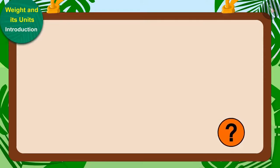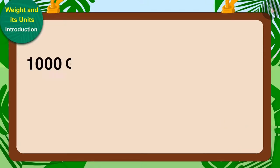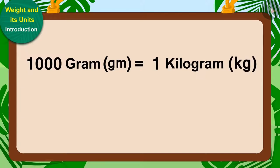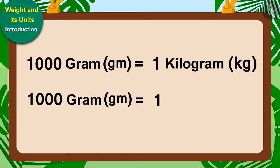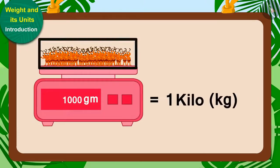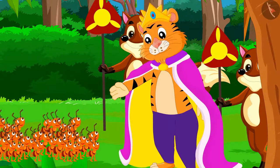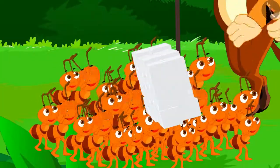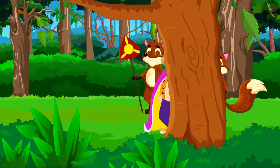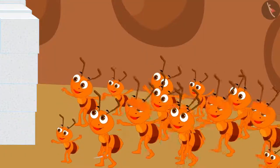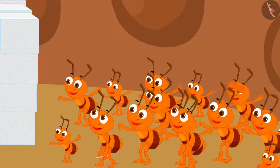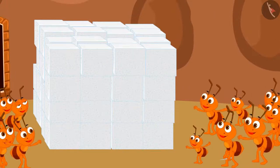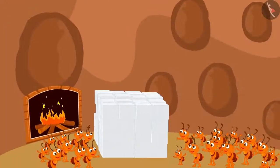And do you know another fun thing? 1,000 grams is equal to 1 kilogram or 1 kilo. This means 10,000 ants weigh 1 kilo. The king was very impressed by the unity and wit of the ants. He gave 10 kilograms of sugar to the ants and resumed his walk. The ants were very happy on getting 10 kilos of sugar, as they would not have to work hard in the cold weather.